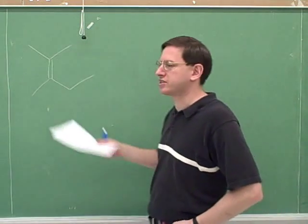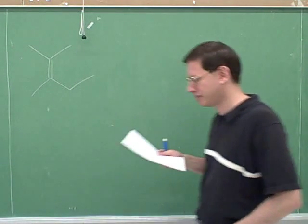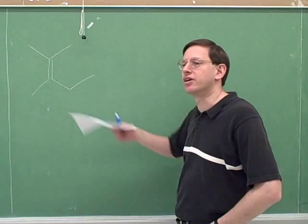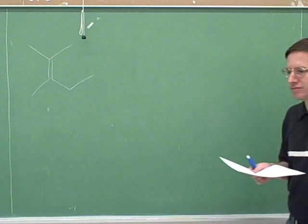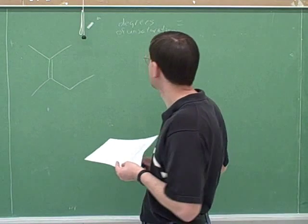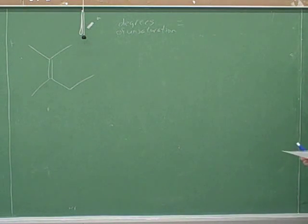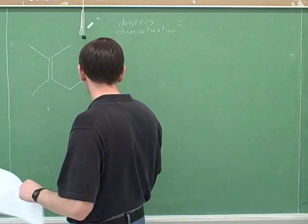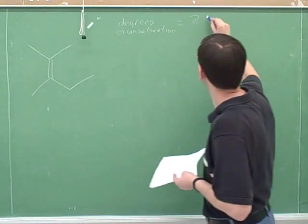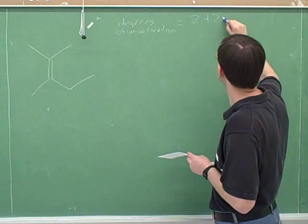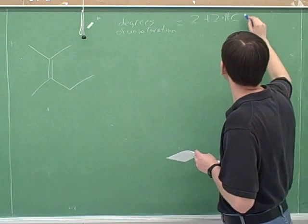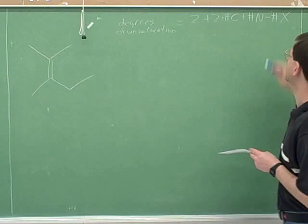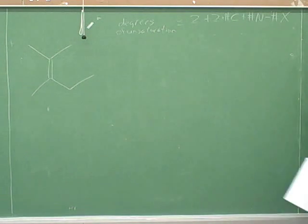So our job is to calculate the degrees of unsaturation for this molecule. Isn't it also to find the molecular formula? Now, in order to find the degrees of unsaturation, you'll need to know the molecular formula. The formula for it is 2 plus 2 times the number of carbons, plus the number of nitrogens, minus the number of halogens. So we can use X as usual to stand for the halogens. Minus the number of hydrogens.